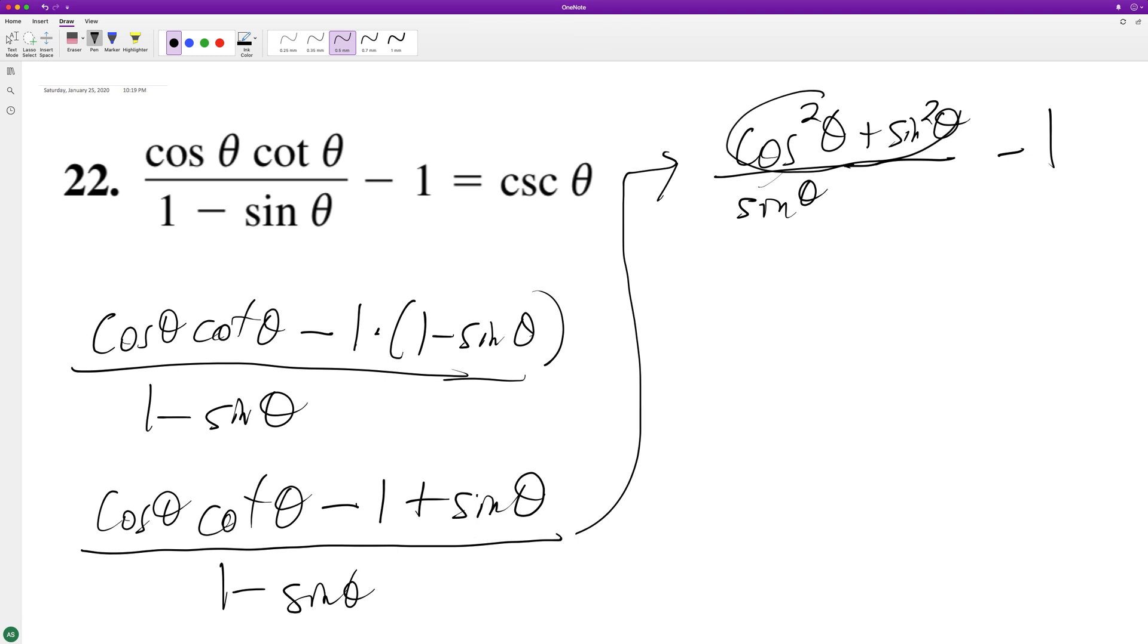And then this becomes one, so we get one over sine theta minus one, and then this is all over one minus sine theta. So if we multiply this by...